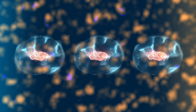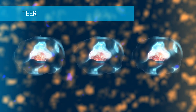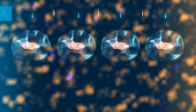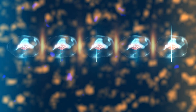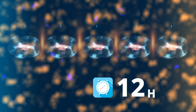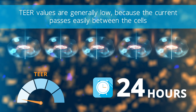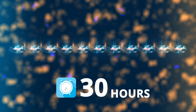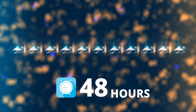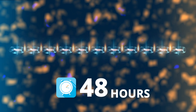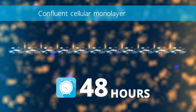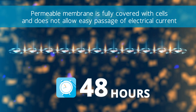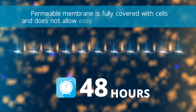Tissue permeability studies require a confluent cellular layer, and TEER measurement is generally used to confirm the formation of a confluent monolayer. Initially, 24 hours after cell seeding, TEER values are generally low because the current passes easily between the cells. Over time, the cells multiply and start covering the gaps. Finally, a confluent cellular monolayer is formed, at which point the permeable membrane is fully covered with cells and does not allow easy passage of electrical current.